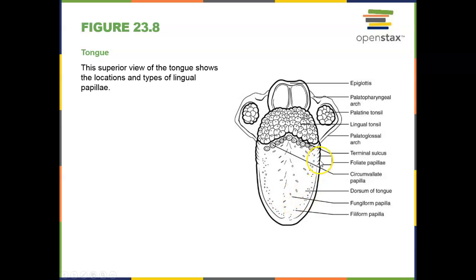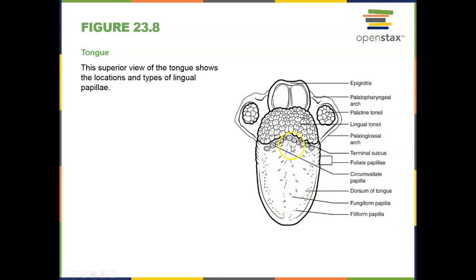The tongue has multiple papillae — tiny structures on the surface of the tongue — and many of those papillae contain taste buds in them, not all but many. There are different types of papillae, and within each type there are different types of taste buds. On the posterior aspect of the tongue we have the lingual tonsil.